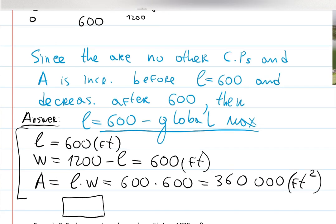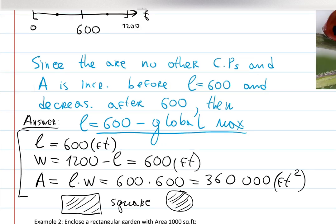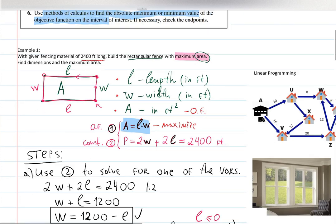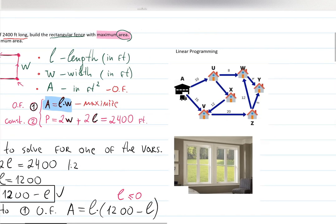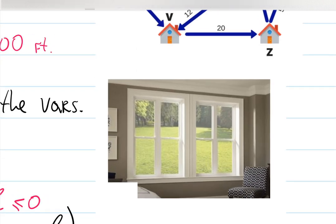What kind of rectangle has equal length and width? It's a square. With only the given material as a restriction, the optimal rectangle is a square. That's why you see so many squares in real-life applications — like windows. Mathematicians determined that the optimal shape for maximizing light through a window is a square. If height is restricted, it becomes a rectangle.